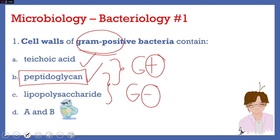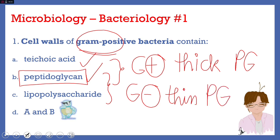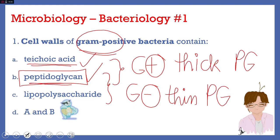Both gram-positive and gram-negative bacteria contain peptidoglycan on their cell wall, but it differs in amount. Gram-positive bacteria have a thick layer of peptidoglycan, while gram-negative bacteria have a thinner layer. Gram-positive bacteria also have teichoic acid on their cell wall, and thus they retain the primary stain color — blue or purple. Gram-negative bacteria, aside from having a thin layer of peptidoglycan, also have lipopolysaccharide on their cell wall, which causes them to lose their primary stain.